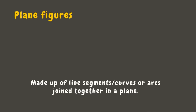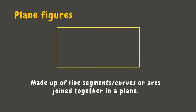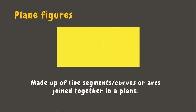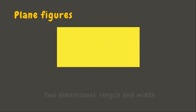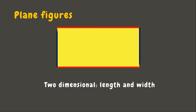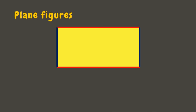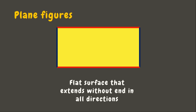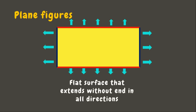Plane figures are made up of line segments, curves, or arcs joined together in a plane. A plane figure has two dimensions: the length and the width. It has a flat surface that extends without end in all directions. Now let's learn some basic plane figures.